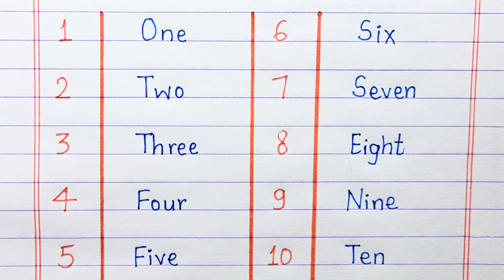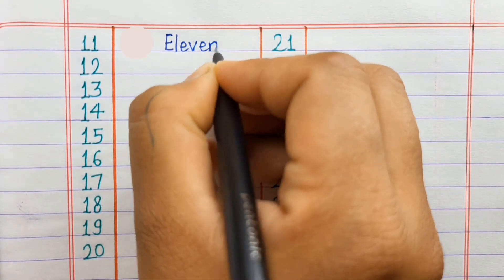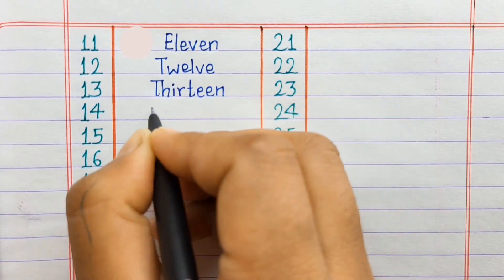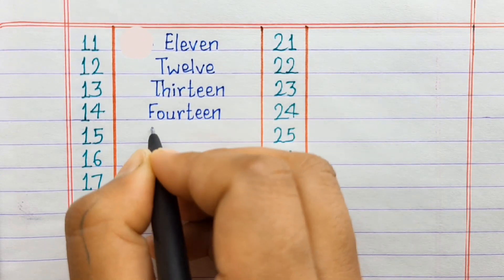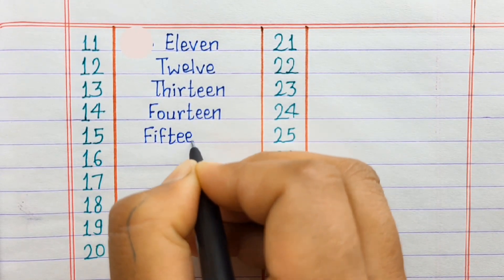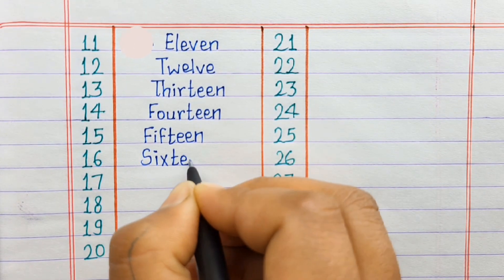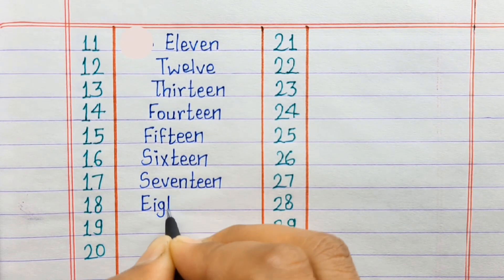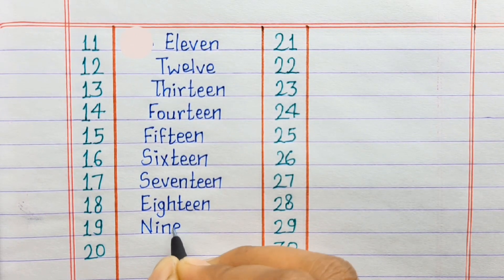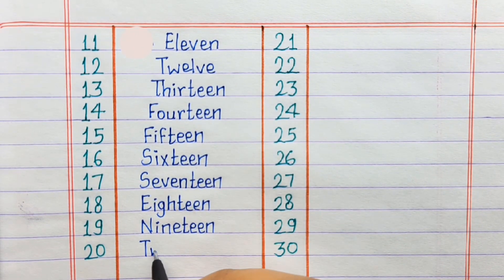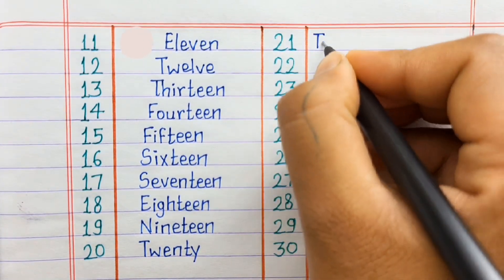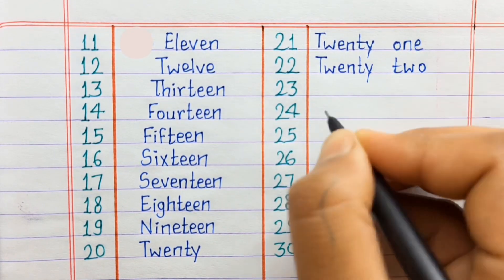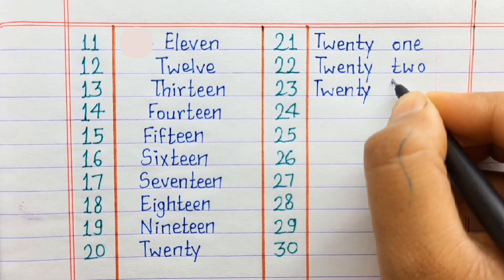11, 12, 13, 14, 15, 16, 17, 18, 19, 20, 21, 22, 23.